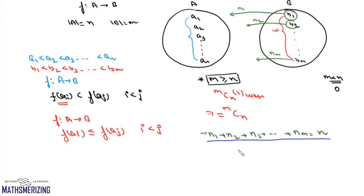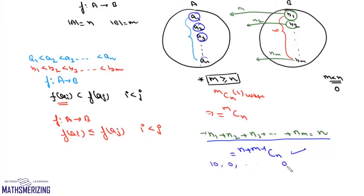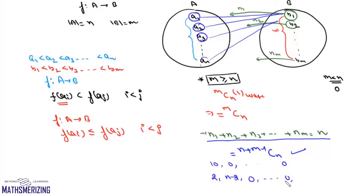Since each element in A must be mapped to exactly one element in B, we get N1 + N2 + N3 + ... + NM = N. We need the number of non-negative integral solutions of this equation, which is (N+M−1)CN. For example, one solution is N1 = N and all others zero — all elements mapped to B1. Another is N1 = 2, N2 = N−2, rest zero. All such mappings correspond to solutions of this equation, so the number of non-decreasing (and non-increasing) functions is (N+M−1)CN.